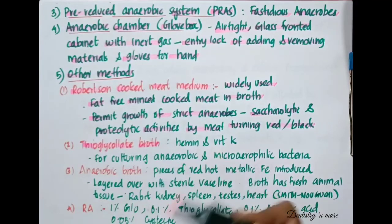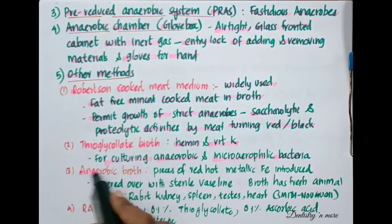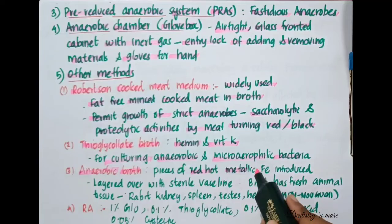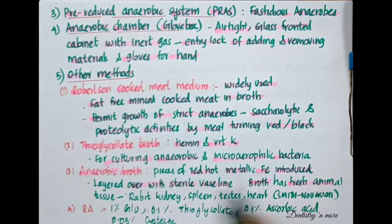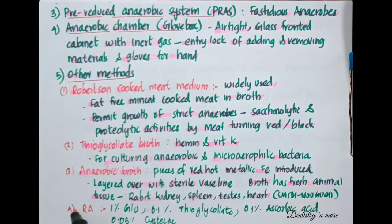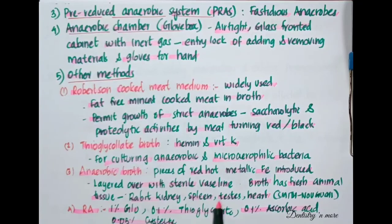Next is thioglycolate broth, an enriched liquid medium containing hemin and vitamin K, used for culturing anaerobic and micro-aerophilic bacteria. Another method is anaerobic growth medium — an easily prepared anaerobic medium into which pieces of red-hot metallic iron are introduced and layered over with sterile vaseline, containing fresh animal tissues like rabbit kidney, spleen, or heart. If it contains heart it is called Smith-Noguchi medium, and it supports the growth of many anaerobes. Finally, reducing agents can be used, where oxygen is reduced in the medium using agents like 1% glucose, 0.1% thioglycolate, 0.1% ascorbic acid, or 0.05% cysteine.